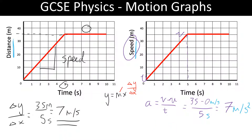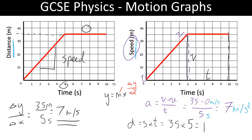There is one more thing we can use this graph for: if we work out the area under the graph. We've got time on the x-axis and velocity on the y-axis. This rectangular shape represents a certain distance, because distance equals velocity times time. We have a speed of 35 and between 5 and 10 seconds we've got 5 seconds, so 35 times 5 gives us 175 metres in this section, which I'll label area 2.